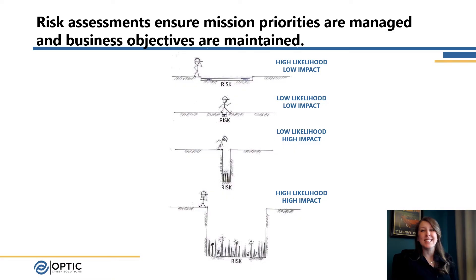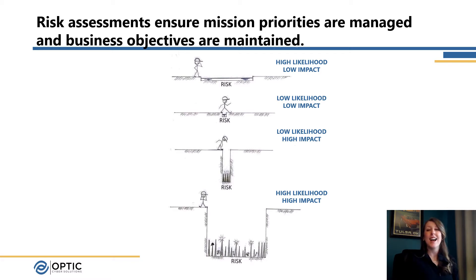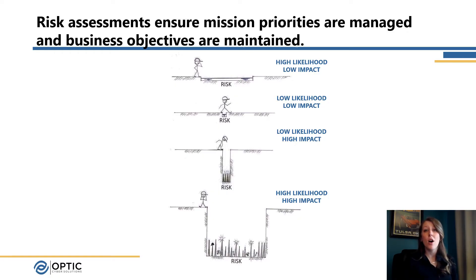The best-case scenario is that second one, where there's a low likelihood that you'll fall in and a low impact. We can see with the third option there's a low likelihood but a high impact — if you happen to trip and fall in, it's not going to be a good day, but it's a relatively low likelihood. That fourth option is really where we're going to want to spend a lot of our time, focusing on those areas that are a high likelihood and a high impact — those we're going to want to manage and prioritize our actions to prevent from occurring.